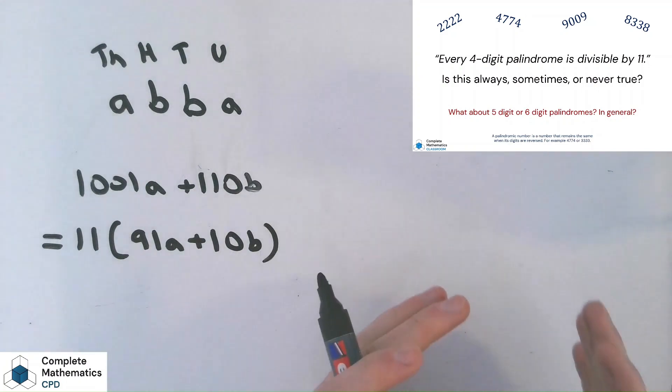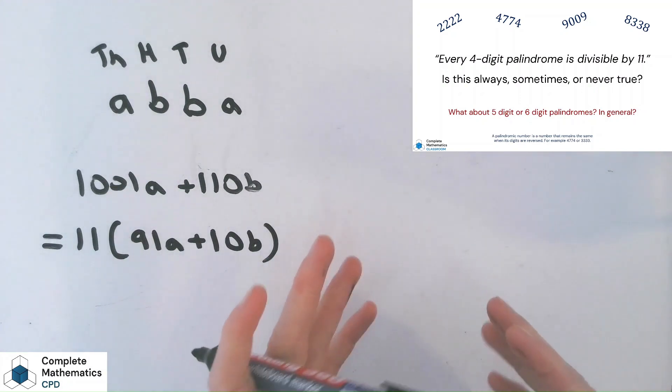OK, so hopefully you like that nice link between the place value work and the formal algebraic proof. And one thing we've not looked at yet is different length palindromes. So I'll leave that for you to have a go at. What about five-digit or six-digit palindromes? Are you going to jump back and test three-digit and two-digit palindromes first to try and specialise with smaller numbers? Have a play with the task and let me know your thoughts.